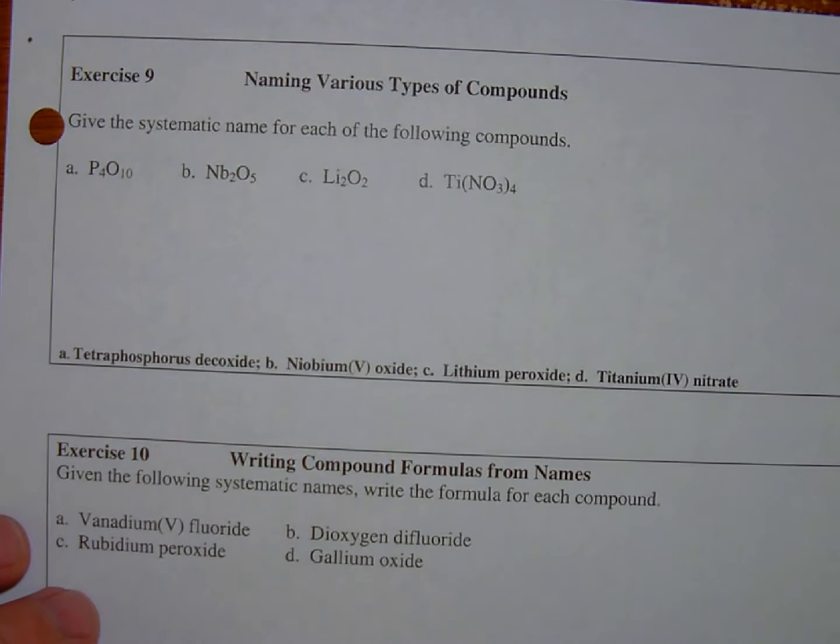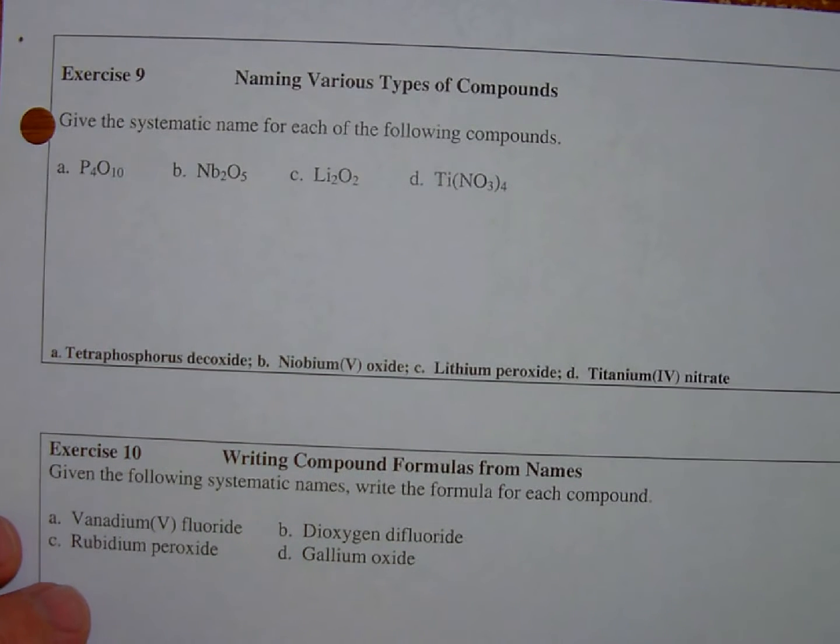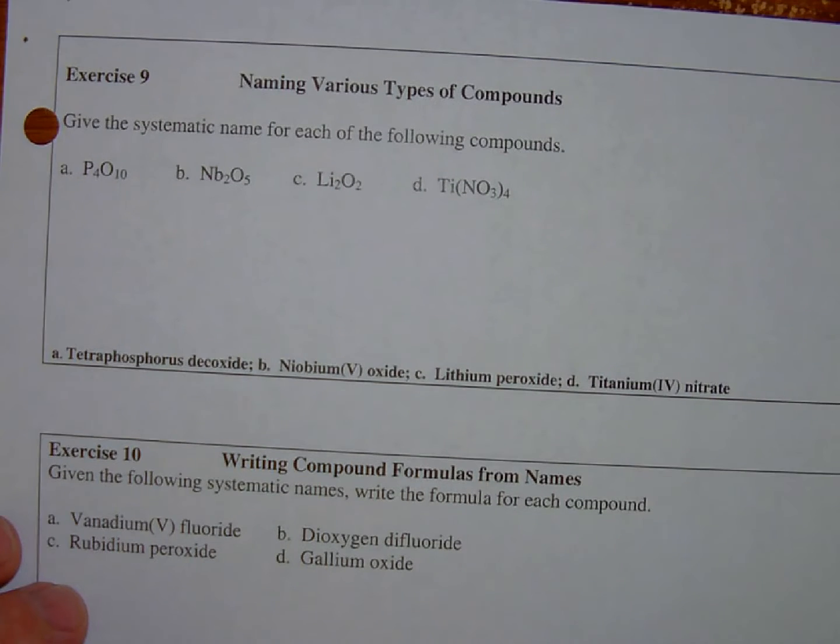Exercise nine. Now let's get some variation in here. Various types of compounds. Give a systematic name for each of the following compounds.